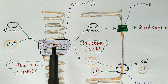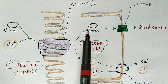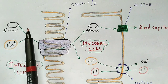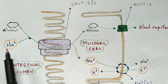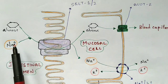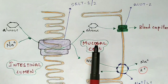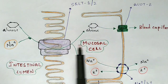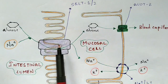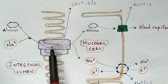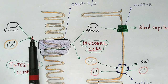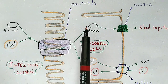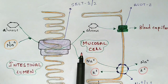The glucose enters the protein carrier and then enters the mucosal cell. This process requires energy, which is provided by the Na+ (sodium) ion. The sodium ion acts as an energy carrier, helping glucose transport from the intestinal lumen into the mucosal cell. The protein carrier acts as a facilitator, pulling glucose towards the mucosal cell side. Along with glucose, the sodium molecule also enters the mucosal cell.